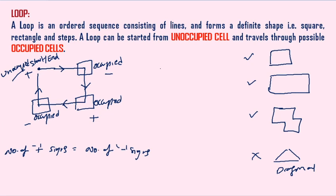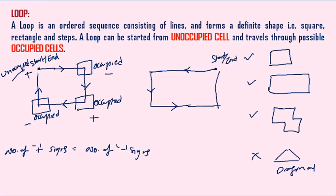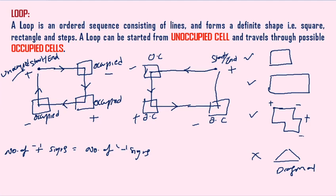Let us see one more example. A loop started from one point going left, then down. The start point goes to the end point. The corners are occupied cells with signs: plus at start, then minus, plus, minus. In another diagram, the signs alternate: plus, minus, plus, minus, plus, minus — and the number of plus must equal the number of minus. Now let us use this concept for solving degeneracy into non-degeneracy.